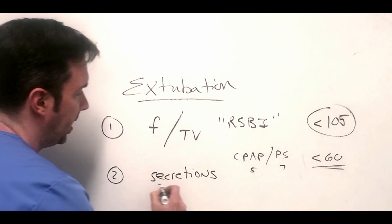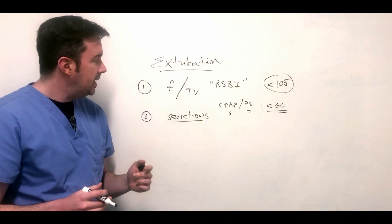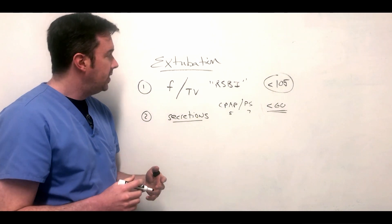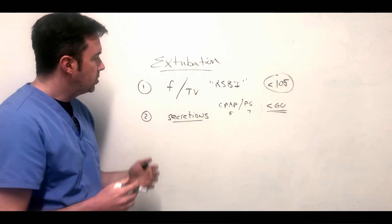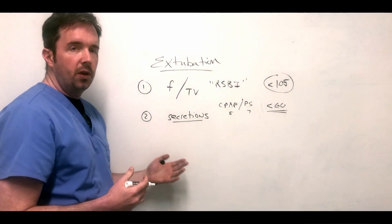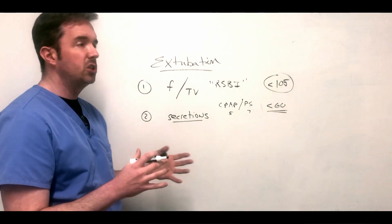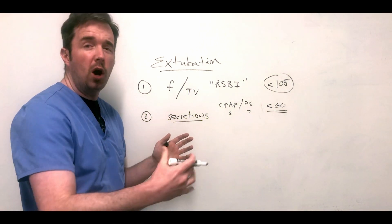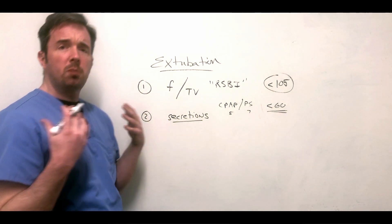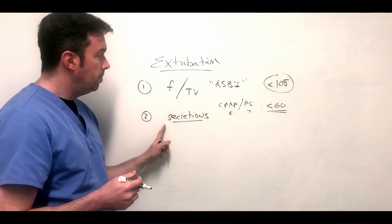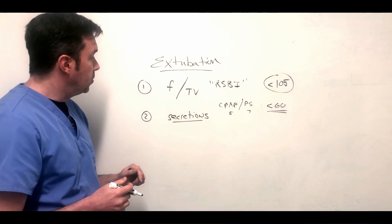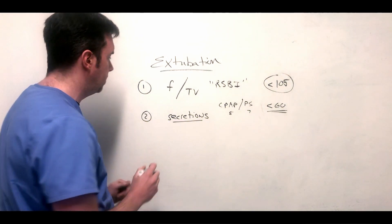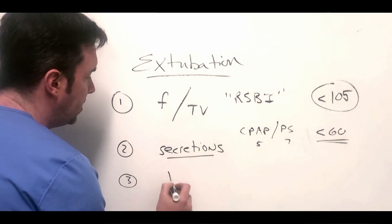Number two: secretions. Secretions are a huge issue for patients that are getting extubated because they are going to have to cough and clear those secretions. If you're having a lot of thick secretions at a high amount, that's one more barrier to a successful extubation. So I typically ask my nurse, my respiratory therapist, how are they doing on secretions. If they say they're having tons of secretions, that's another thing I keep in mind, because if this patient doesn't have a very strong cough, if they're weak, maybe they are having trouble lifting their head, if it's a neuro-injured patient, maintaining clearance of their airway through cough and clearance of the secretions can be a big problem.